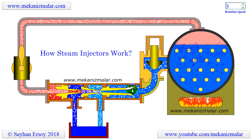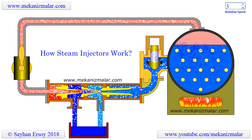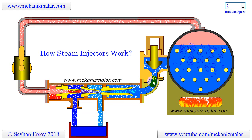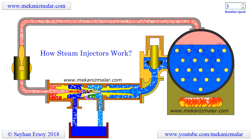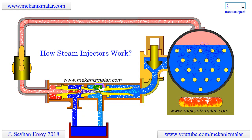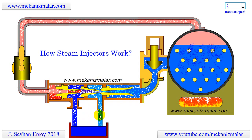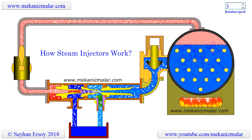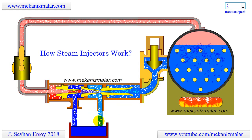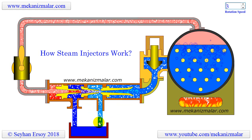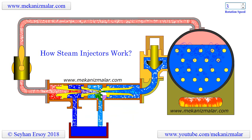What lies between the combining cone and the delivery cone is the overflow chamber. Adding this chamber to the steam injector was the ingenuity of the steam injector's inventor, Henri Giffard. This chamber and the overflow pipe allows the excess water to be sent back to the reservoir and prevents the steam injector from choking, especially when it is starting to operate for the first time. This allows the injector to operate smoothly.